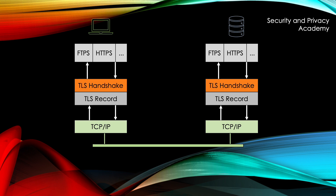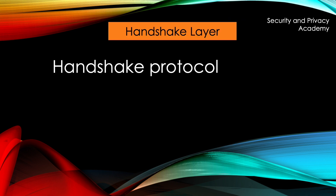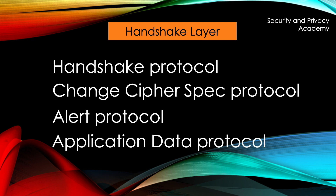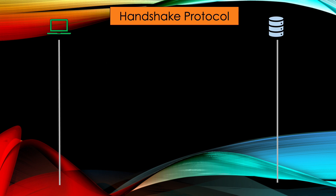The handshake layer itself is made up of the handshake protocol, which is responsible for the establishment of the session; the Change Cipher Spec protocol, which activates newly negotiated security parameters; the alert protocol, which alerts in case of errors; and the application data protocol, which passes through all the necessary data to the record layer, which we will cover shortly. But first, let's look at how the handshake protocol works.